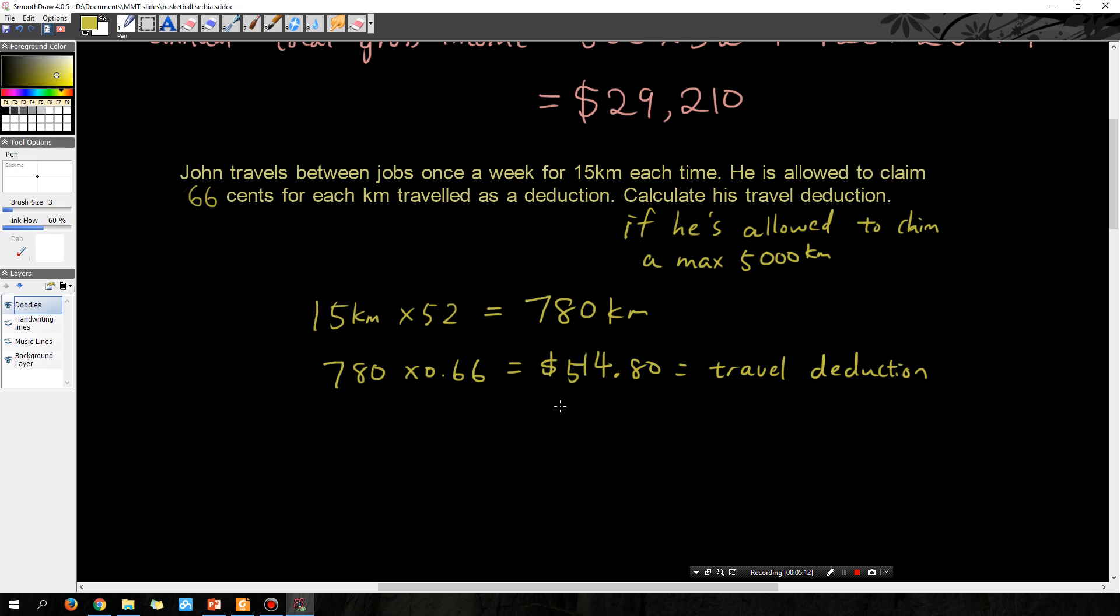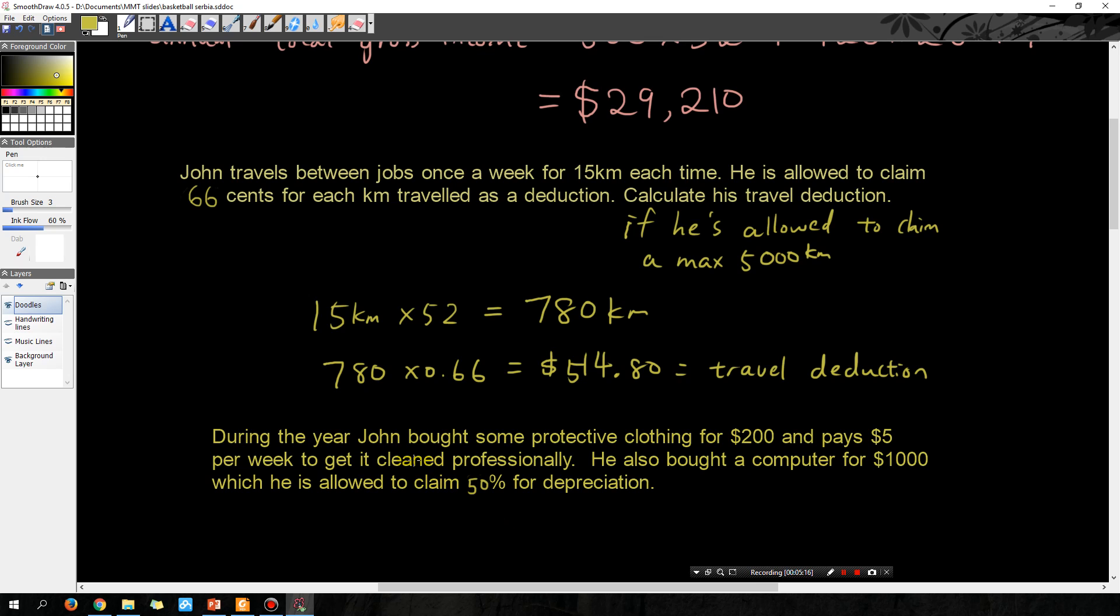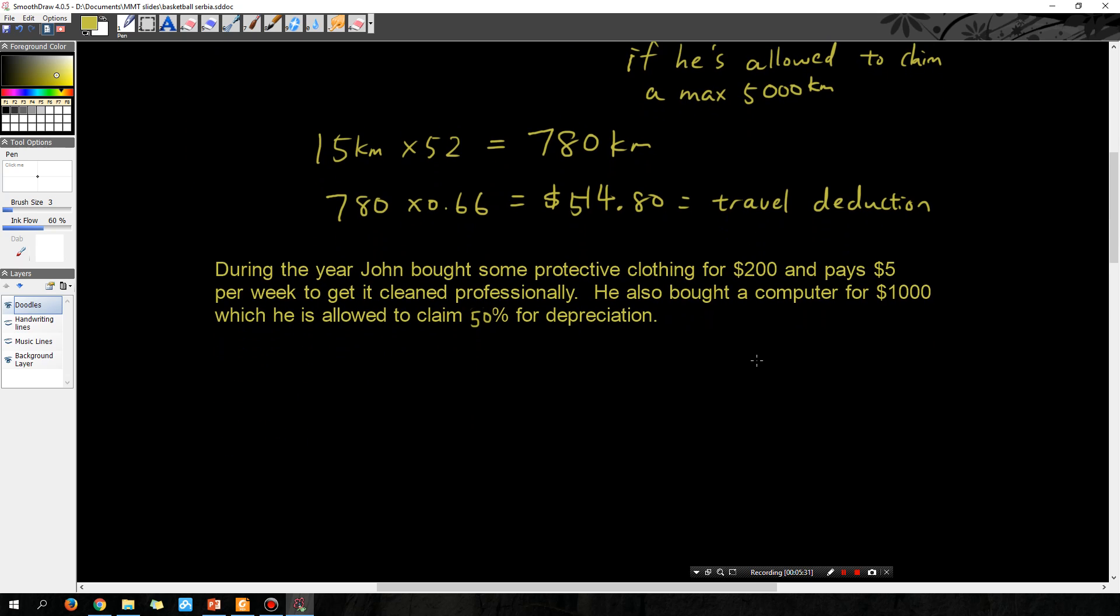During the year John bought some protective clothing for $200 and pays $5 per week to get it cleaned professionally. He also bought a computer for $1,000 which he's allowed to claim 50% for depreciation.